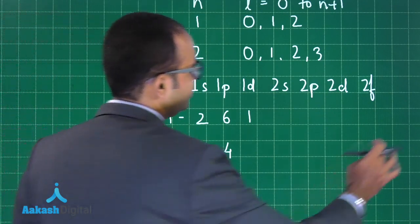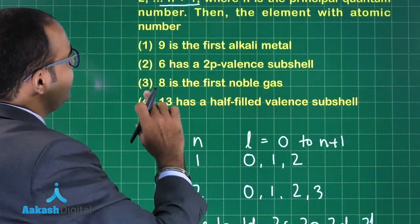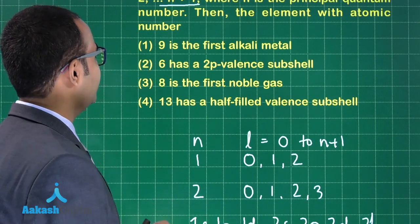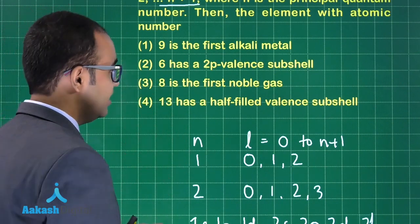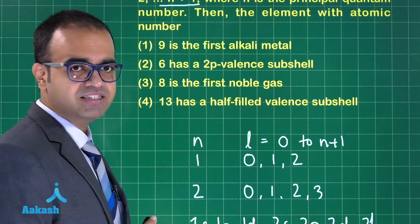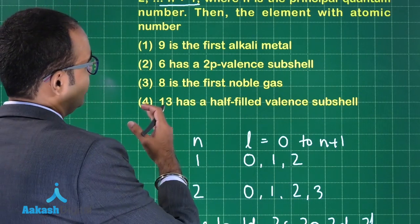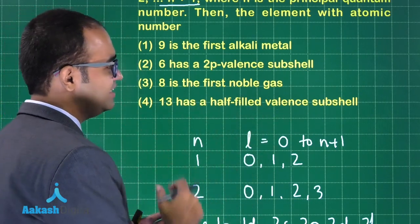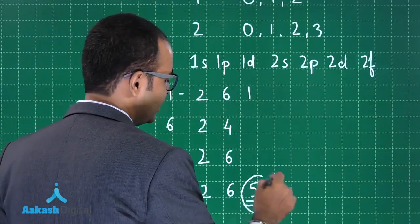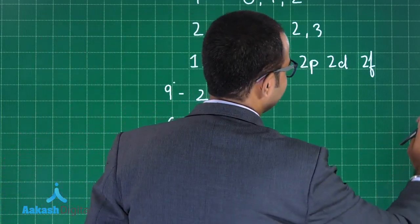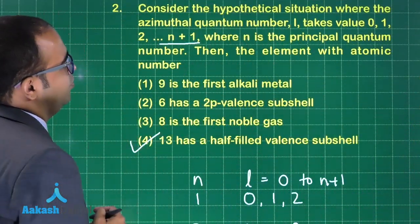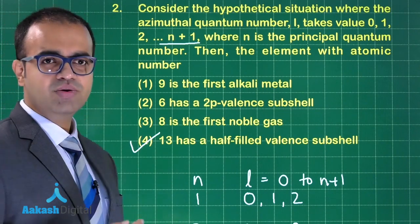Now evaluating the options: atomic number 9 is the first alkali metal — no, its last electron goes into 1d, so it is not an alkali metal. Atomic number 6 has 2p valence — no, it has 1p valence. Atomic number 8 is the first noble gas — no, it is not. Atomic number 13 has a half-filled valence subshell — yes, that is correct, with a half-filled 1d. The correct answer is option 4.